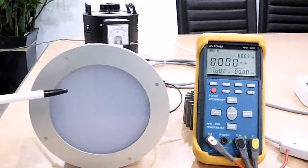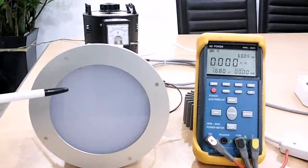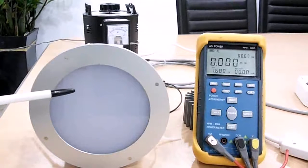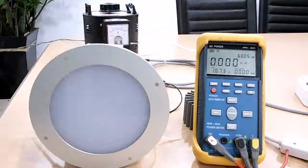Nominal power 15W LED downlight, 55 lumen per watt. Power meter, power generator.